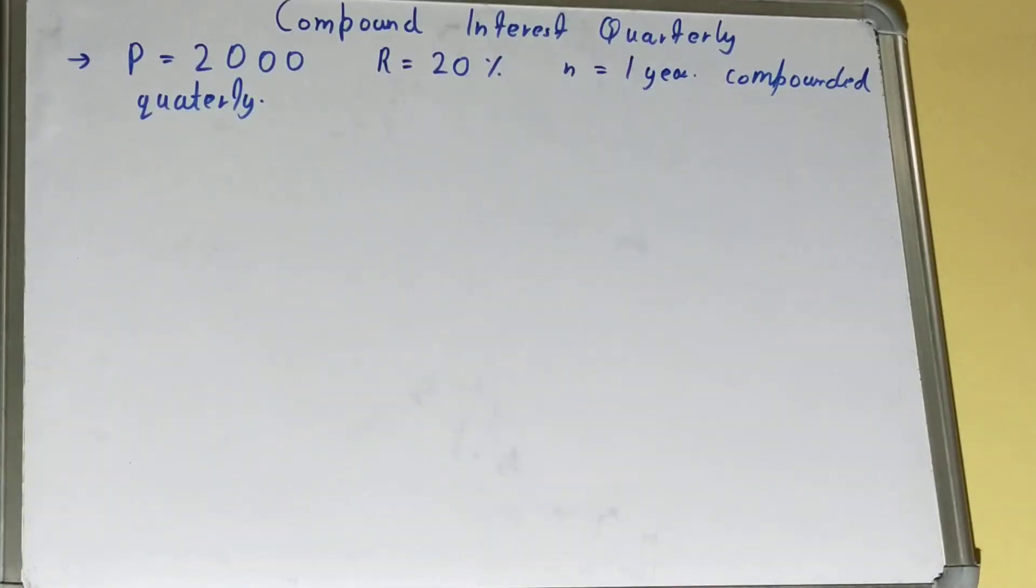The problem is it is compounded quarterly. So the formula changes. You need to remember that change in the formula, and the calculation goes as it is.